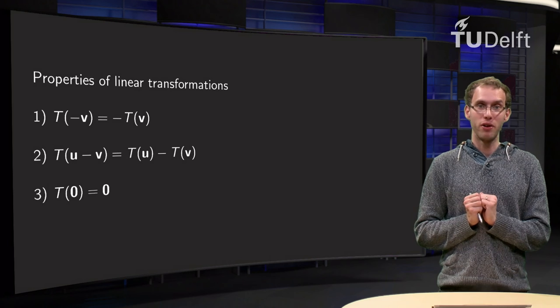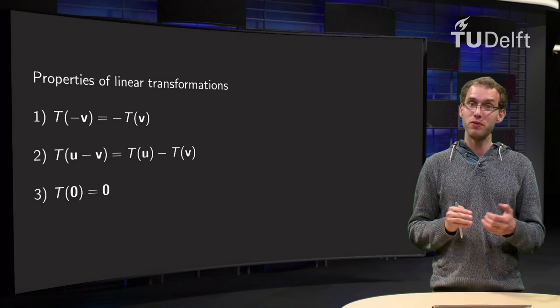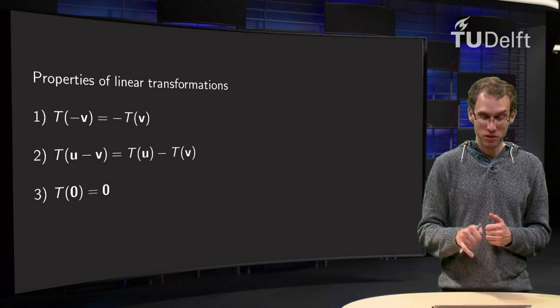Here we have our three properties: T of minus v equals minus T of v, T of u minus v equals T of u minus T of v, and T of zero equals zero.